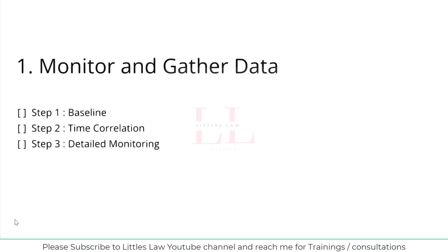The second part of step one is time correlation — I will observe if there are any time-based patterns. For example, if the spike occurs every five minutes or at a specific time of day, that would give me an idea that something is going wrong during that time window.